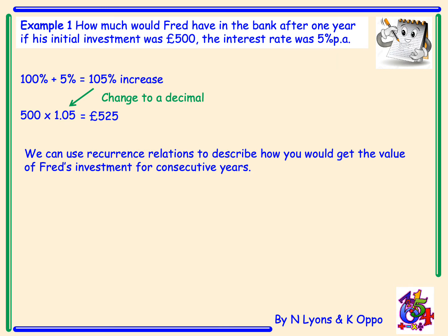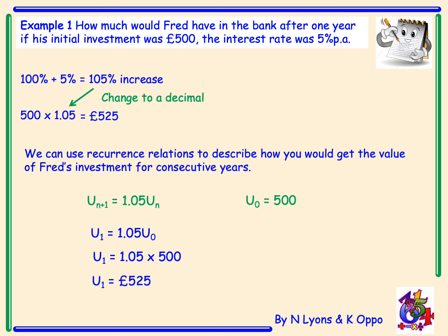We can use recurrence relations to describe how you would get the value of Fred's investment for consecutive years. So we can say that u_{n+1} equals 1.05 multiplied by u_n. To get the next term in the sequence, you multiply the previous term by 1.05, and our starting value is 500. So to get the value after year one, it's 1.05 times u_0, which is 1.05 multiplied by 500, and again we get the answer £525.